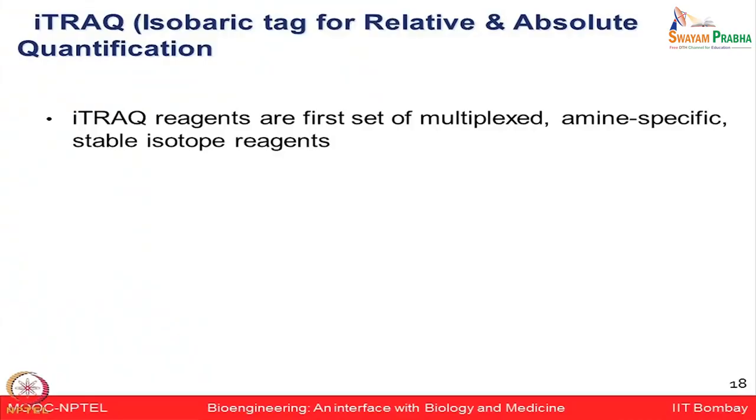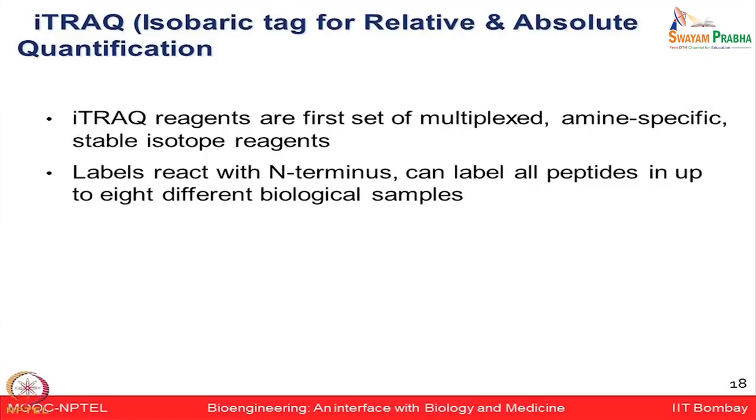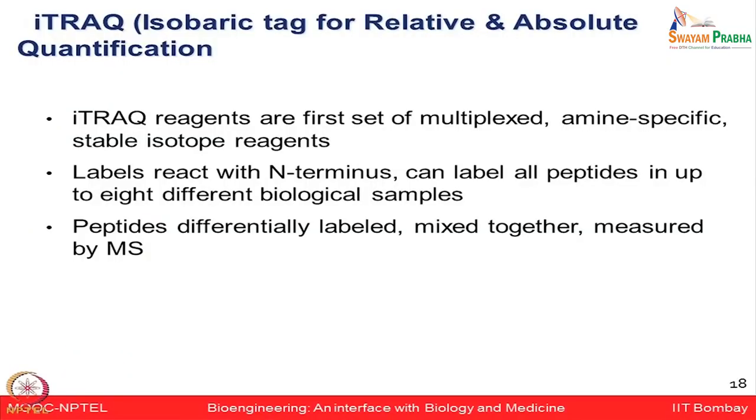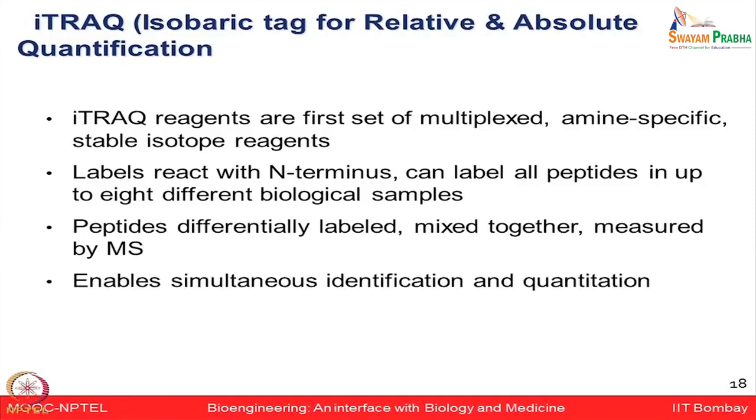Just as DIGE technology enables differential analysis in gel-based proteomics, when the intention is not only to identify proteins but also to quantitate them, technologies like iTRAQ (isobaric tagging for relative and absolute quantification) have emerged as a very strong platform for quantitative proteomics. iTRAQ reagents are multiplex, amine-specific, stable isotopic reagents that label proteins by reacting with their N-terminal sequence. You can use 4-plex or 8-plex iTRAQ to compare up to 4 or 8 different biological conditions, then mix labeled peptides and analyze them simultaneously in the mass spectrometer for identification and quantification.